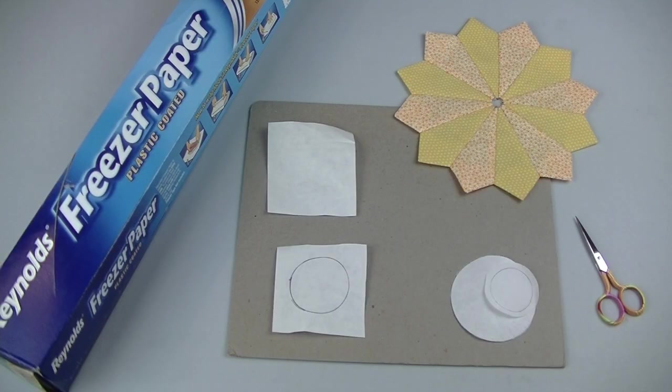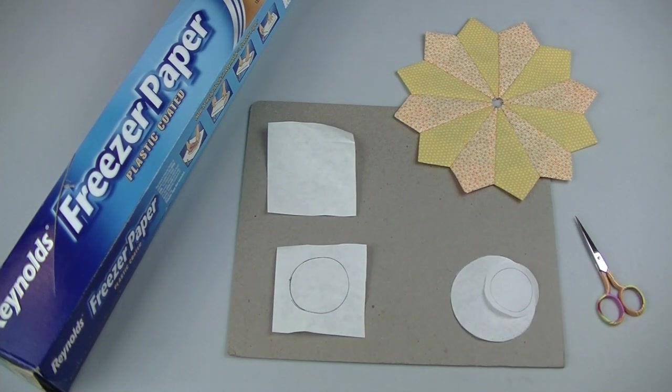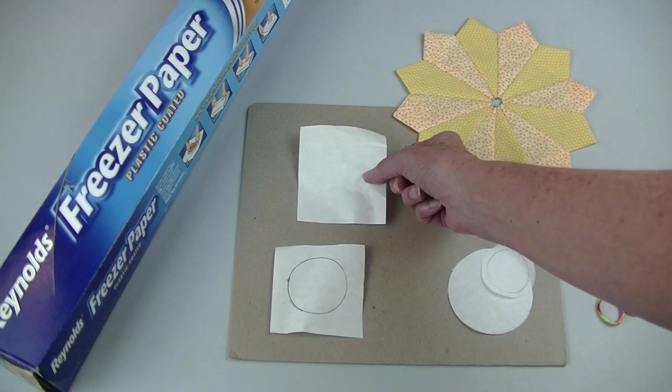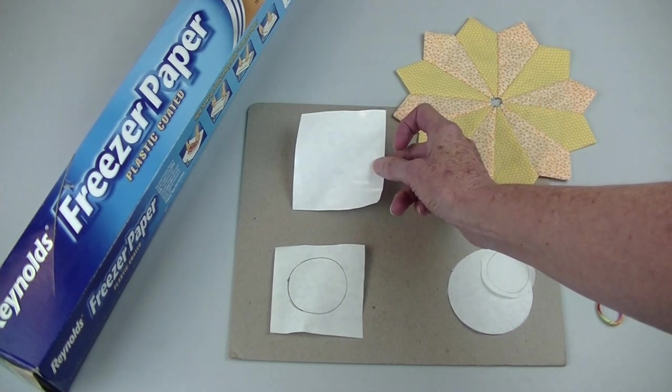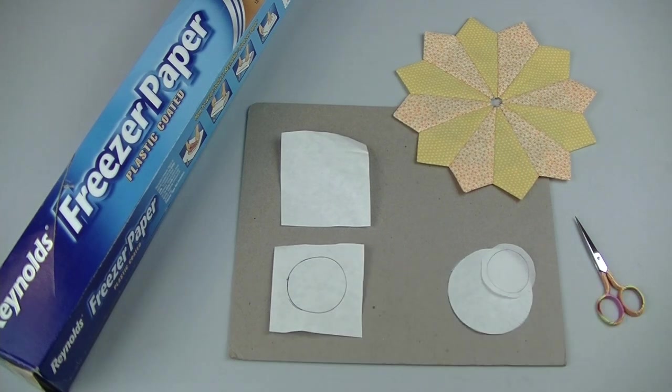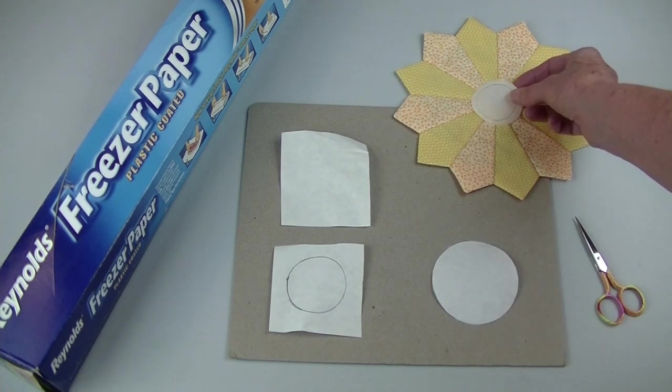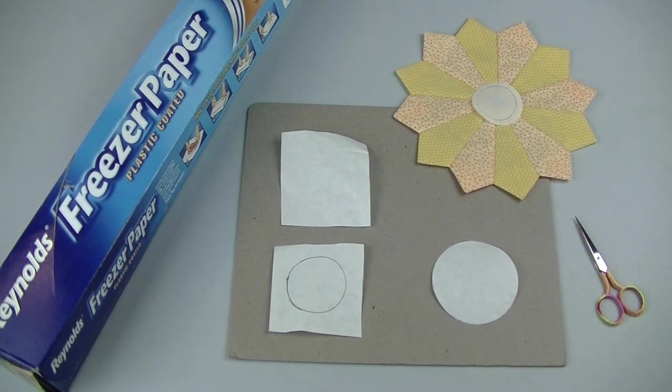As I said in the previous video there are many methods available for appliquéing circles. I like to use freezer paper to help stabilize my shape. On one side there's plain paper and on the other it's shiny. I traced the circle on the plain paper side. Now before I did this I tried out different size shapes to see which size I like best.